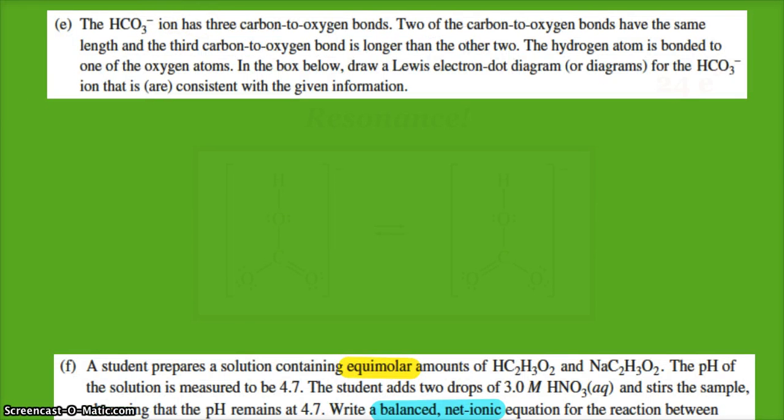All right, the bicarbonate ion has three carbon-to-oxygen bonds. Two of them have the same length, and the third one is longer. The hydrogen atom is bonded to one of the oxygen atoms. In the box below, draw a Lewis diagram or diagrams for the bicarbonate ion that is or are consistent with the given information. Hmm, smells like resonance, doesn't it? You've got two of the carbon-oxygen bonds have the same length and the third one's longer, and it told us the hydrogen atom is bonded to an oxygen.